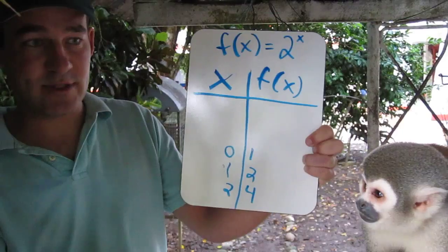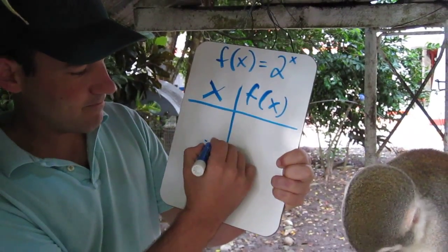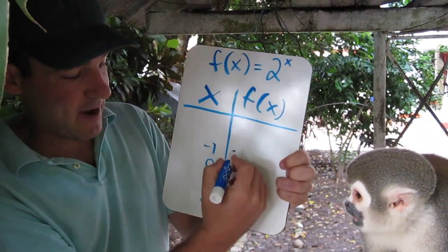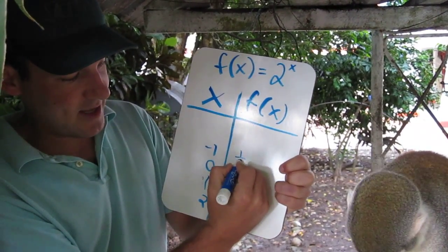Now let's go the other way and see what some negative values look like. When x equals negative 1, we have 2 to the negative first power, which is 1 half.